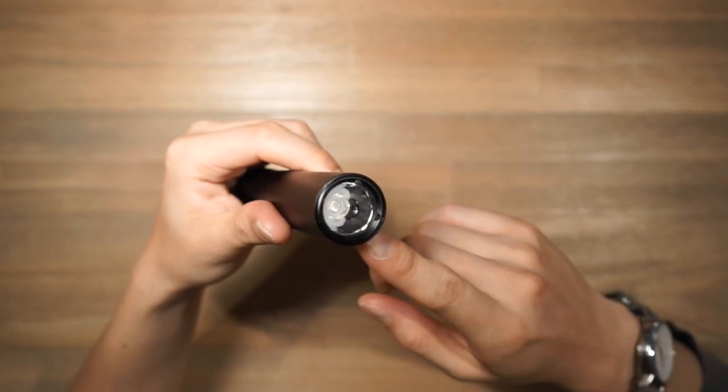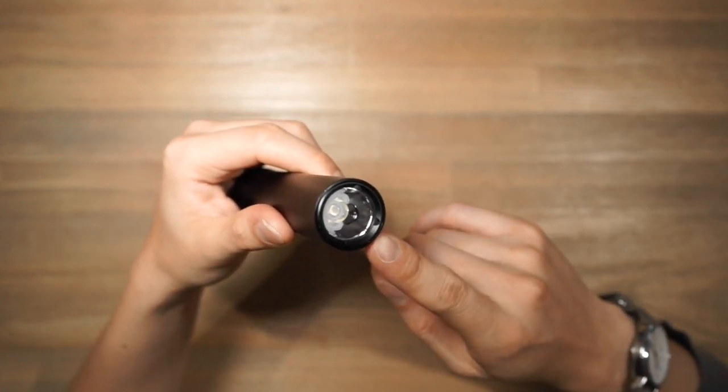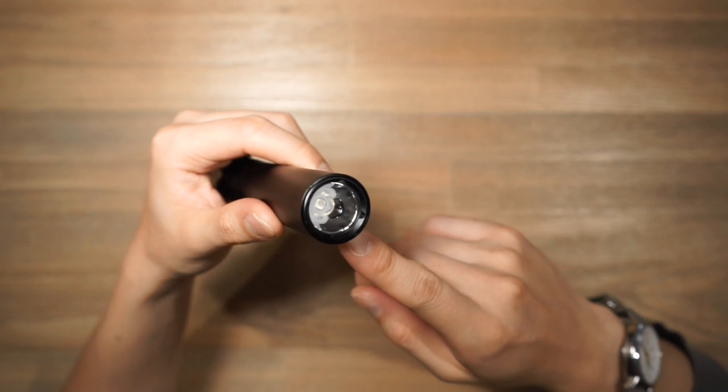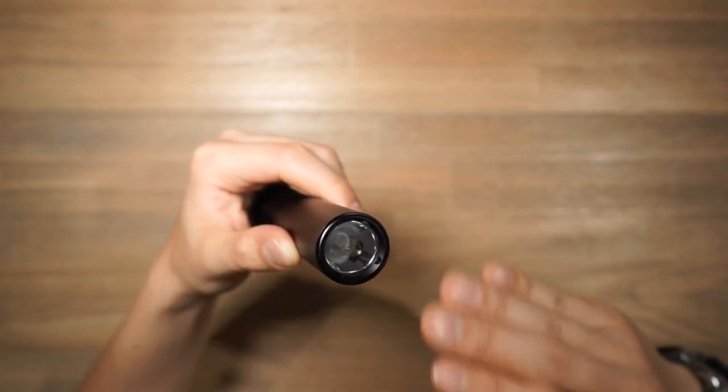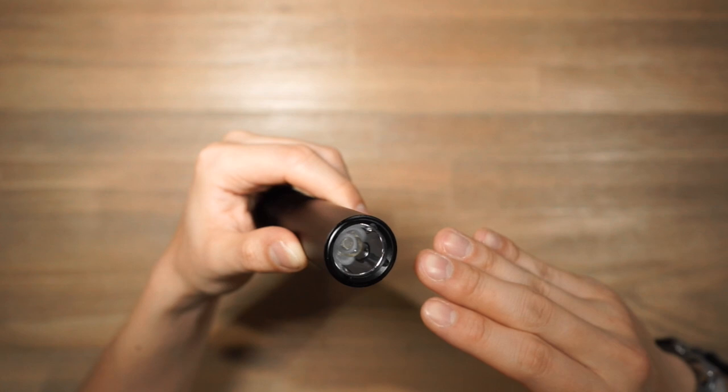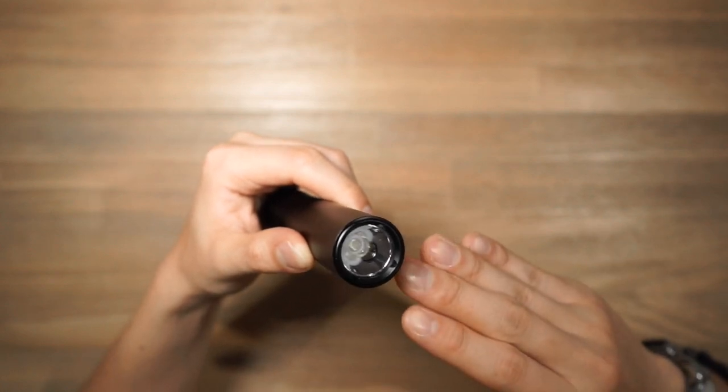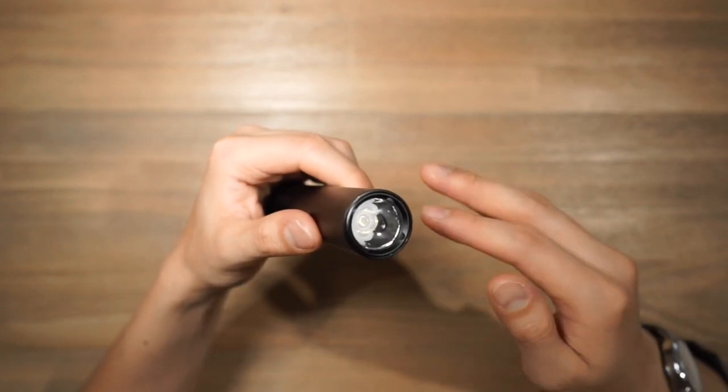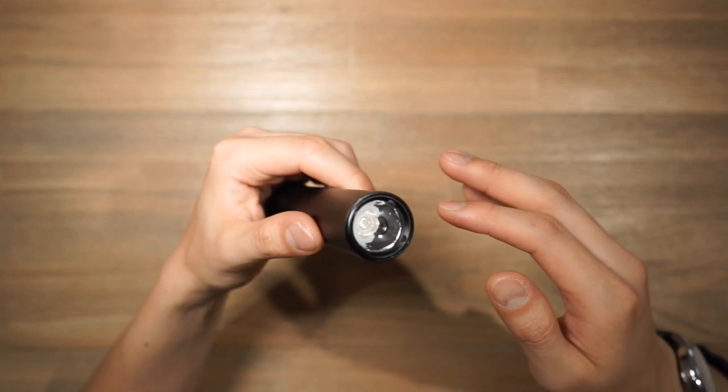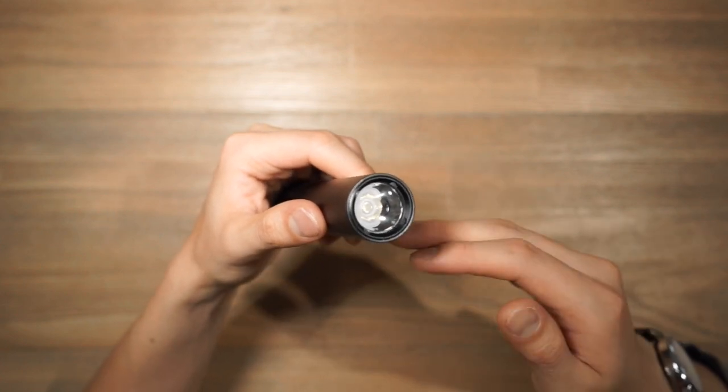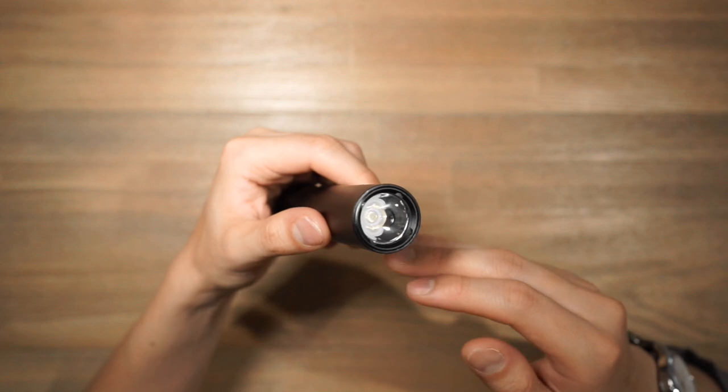In terms of the light itself it is a Cree XP L2 V6 LED and it will have an output of 3200 milliamps per hour from an 18650 battery. Now the battery is easily removable and we'll show that later on in the video but you can also charge the battery via a USB-C port.